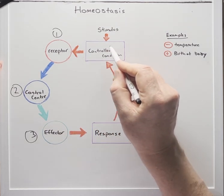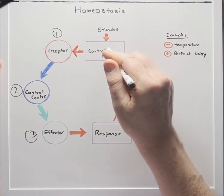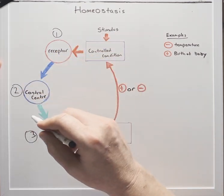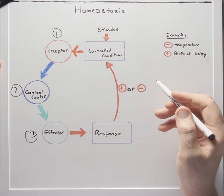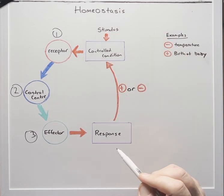So this is a positive, so it's actually going to strengthen that initial change. So that causes more pushing, therefore more stretching and this keeps amplifying and amplifying and amplifying until the baby is born and the stimulus is removed and the control condition goes back to what it originally was.